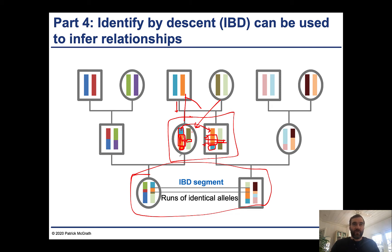Looking further at the relationship between cousins: this individual produced this chimeric chromosome, and this individual produced this one. You can see there is still a short region of the chromosome that is identical between them. So these cousins would also have part of their DNA be identical by descent.